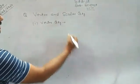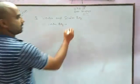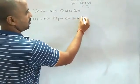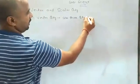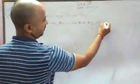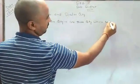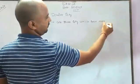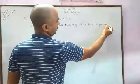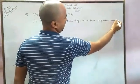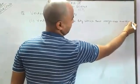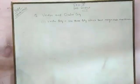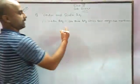Vector quantities are those quantities which have magnitude and direction. Physical quantities which have both magnitude and direction are called vector quantities.